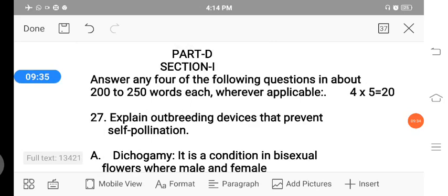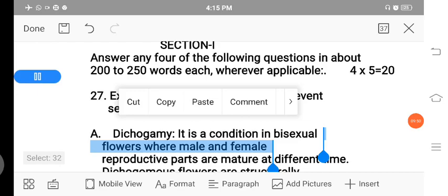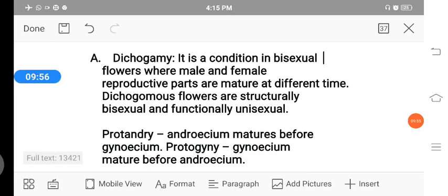Next, Part D, five mark question. In that first one, explain outbreeding devices that prevent self-pollination. There are list of outbreeding devices. In that first one, dichogamy. It means bisexual flowers where male and female reproductive parts mature at different time. The flowers are bisexual. In those bisexual flowers, the male and female reproductive parts mature at different time. Then, dichogamy flowers are structurally bisexual and functionally unisexual. This condition prevents self-pollination.